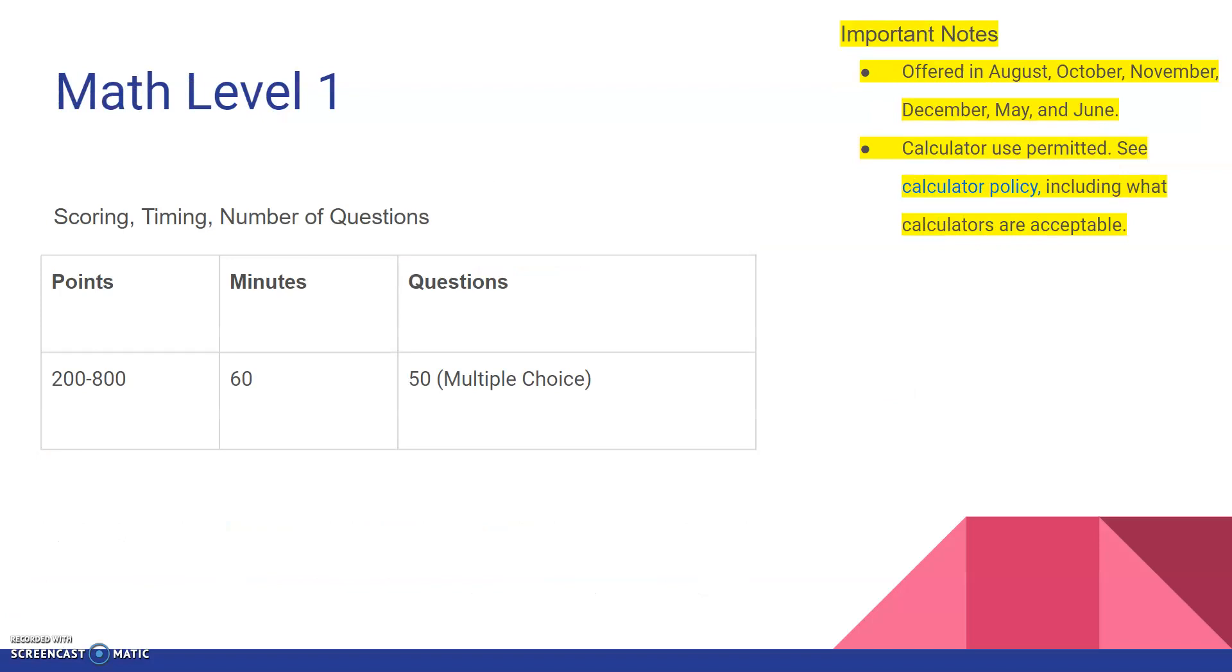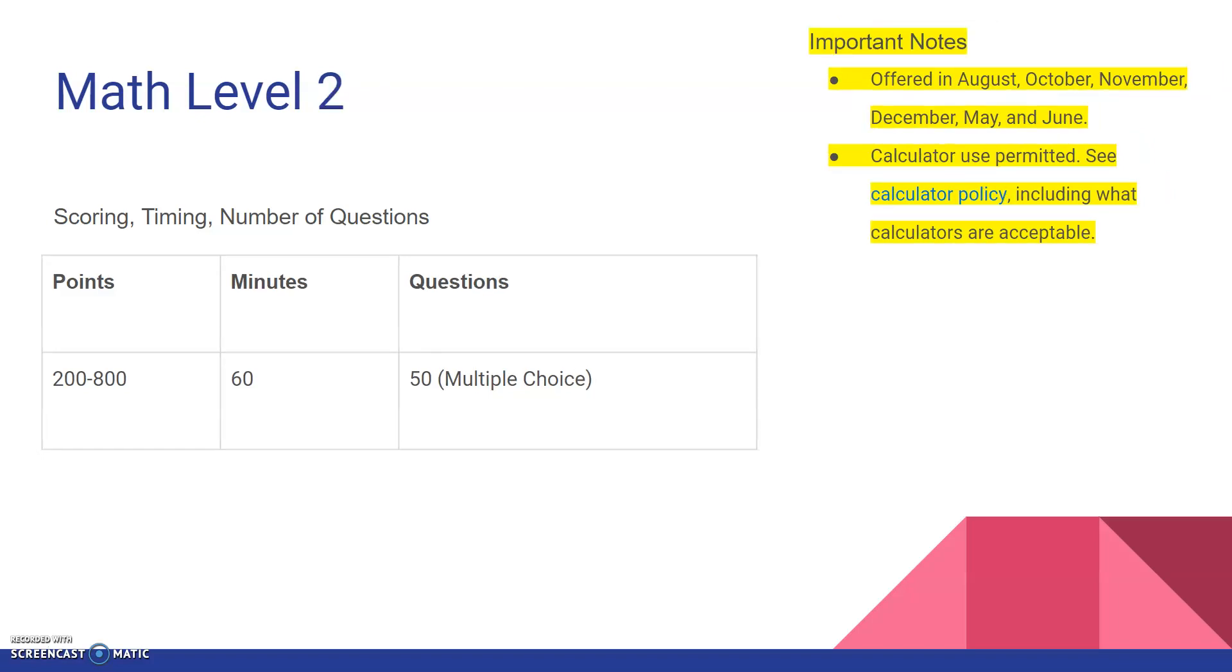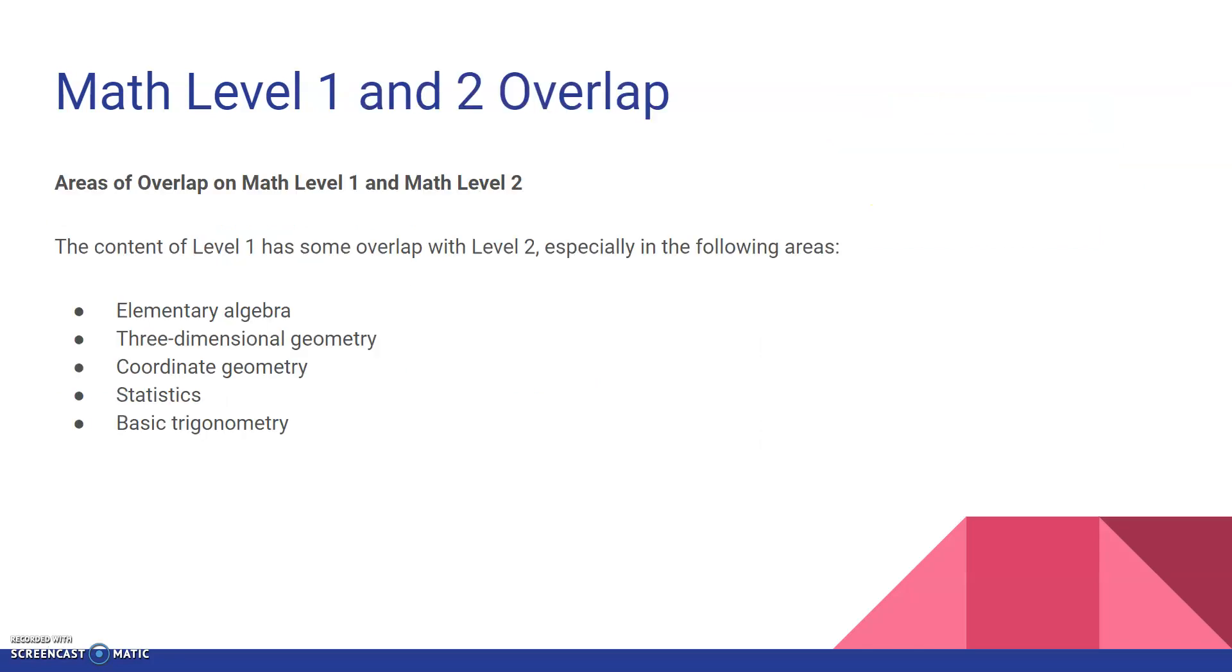Next thing, math level one and math level two. In this one, you're allowed to use a calculator. So if you have a normal Texas Instrument graphing calculator, that should be good to go. That one is allowed. So you can have a TI-84, TI-83. Those are allowed. You can check if you have a different calculator just to see if it's allowed. You're going to get 50 multiple choice questions. You got 60 minutes, and that's basically it. Math level two, 50 multiple choice, 60 minutes. Once again, calculator is permitted. I just want to talk about the level one and two overlap.